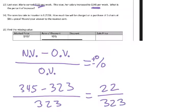So 22 over 323 gives us the percent increase. I put plus or minus in the formula because if the result is negative, the numbers would be flipped — meaning you have less value. But we won't see that in this course; they'll always be positive, so you'll always have a percent increase.